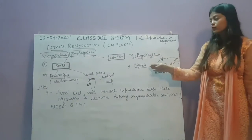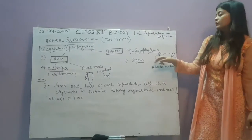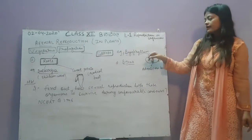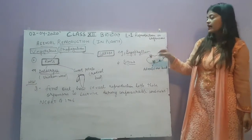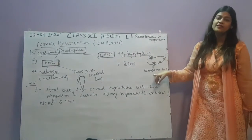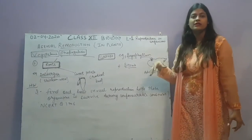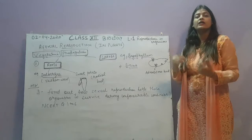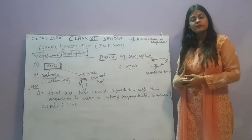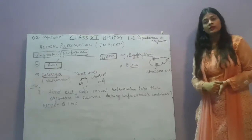Next is vegetative propagation through leaf. Examples include Bryophyllum and Begonia. These plants have swollen leaves with marginal ends, where small adventitious buds are present. When the leaf falls to the ground and comes in contact with the soil under favorable conditions, the small roots take up nutrients from the soil and the adventitious buds grow into new plants.